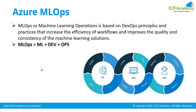MLOps brings in an additional dimension: machine learning related workloads and tasks. MLOps, or Machine Learning Operations, is based on DevOps principles and practices that increase workflow efficiency and the quality and consistency of machine learning solutions. We bring in models and data — not just code — and follow the cycle: plan, create, verify, package, release, configure, and continuously monitor. This is what we call CI/CD — Continuous Integration and Continuous Delivery — applied to machine learning.